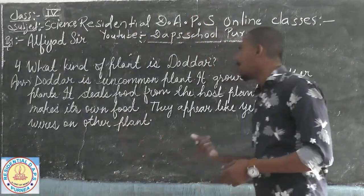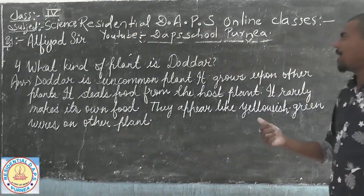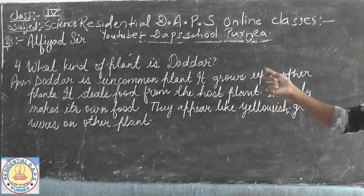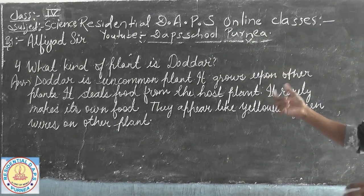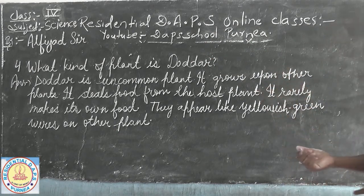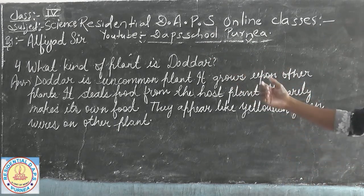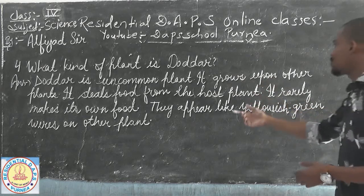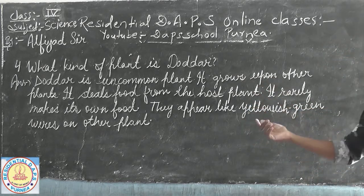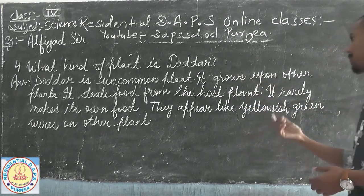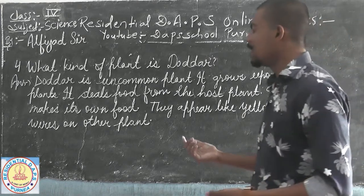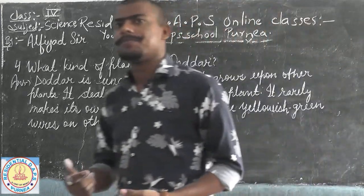What kind of plant is ordered? It is an uncommon plant. It goes upon other plants and takes food from the host plant. It rarely makes its own food. They appear like they always create bias on their other plant.